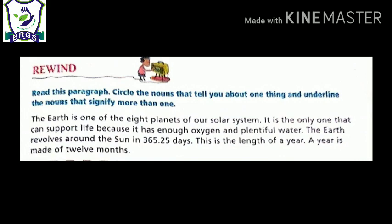The earth is one of the eight planets of the solar system. Earth here is one, so we will circle it. Planets here is many, so we will underline it. Solar system is one, so we will circle it. It is the only one that can support life because it has enough oxygen and plentiful water. Life, oxygen, and water signify one, so we will circle them. The earth revolves around sun in 365.25 days. Sun is one, so we will circle it. Days are indicating many, so we will underline it. This is the length of a year. Year is one, so we will circle it. A year is made up of 12 months. Months are many, so we are going to underline it.